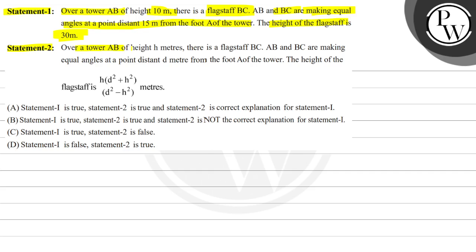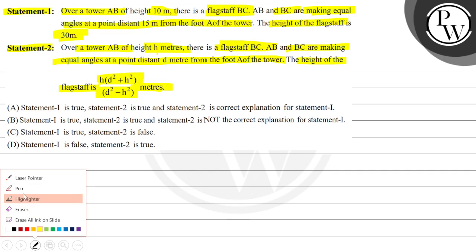Statement 2: Over a tower AB of height 10 meters, there is a flagstaff BC. AB and BC make equal angles at a point distant 15 meters from foot A. The height of the flagstaff is HD² + H² upon D² − H² meters.